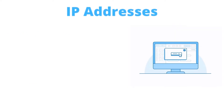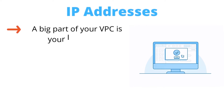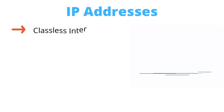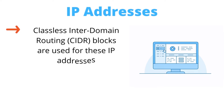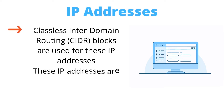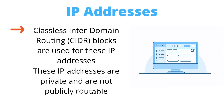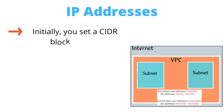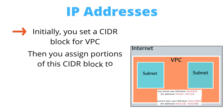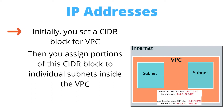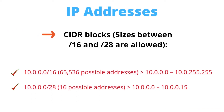IP addresses: a big part of your VPC is your IP address range. Classless interdomain routing blocks are used for these IP addresses, which are private and not publicly routable. Initially, you set a CIDR block for the VPC, then assign portions of this CIDR block to individual subnets inside the VPC. CIDR block sizes between /16 and /28 are allowed.